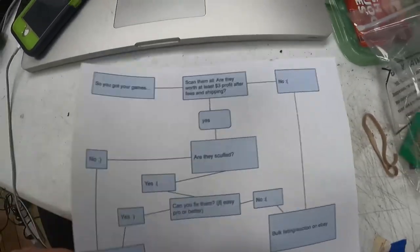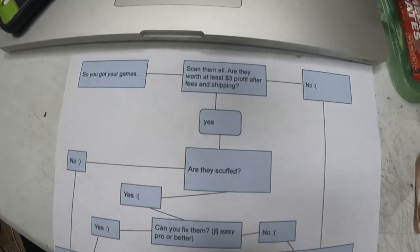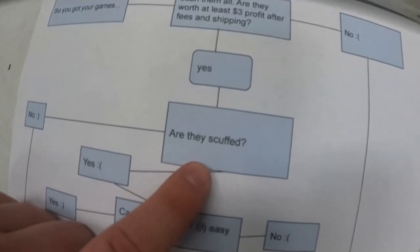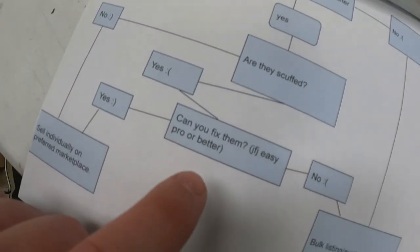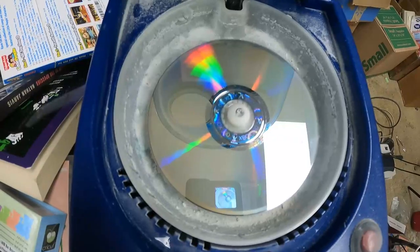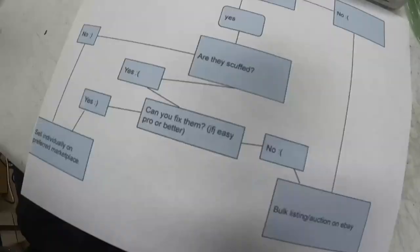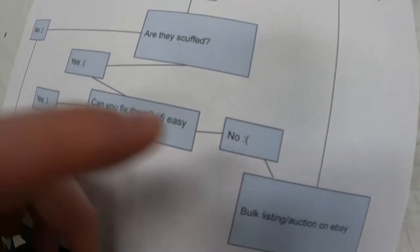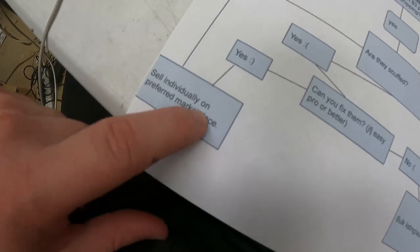Here's how the flowchart works: scan your games — are they worth at least $3 after fees and shipping? If no, sell them in a bulk listing on eBay. If yes, are they scuffed? If not, sell them individually on your preferred marketplace — mine is Amazon. If they are scuffed, can you fix them with a JFJ Easy Pro or better? I use both an Elm Eco Pro 2 and a JFJ Easy Pro — rough buff with sandpaper on the JFJ, then fine buff with the Elm. The JFJ handles about 80–90% of discs. If you can't fix them, do a bulk listing and note they're damaged — you'll still get decent money. If you can fix them, sell individually.